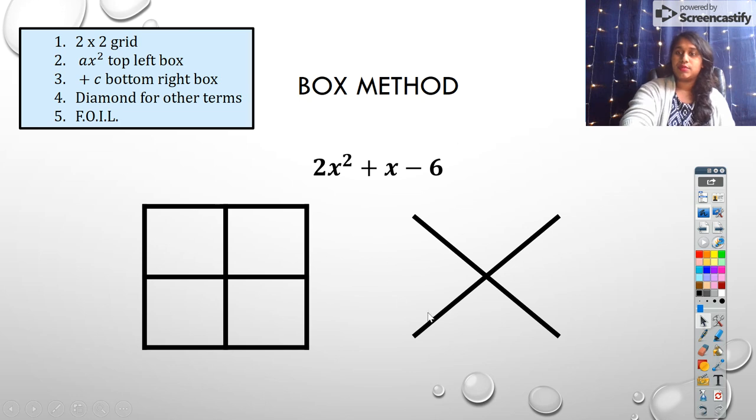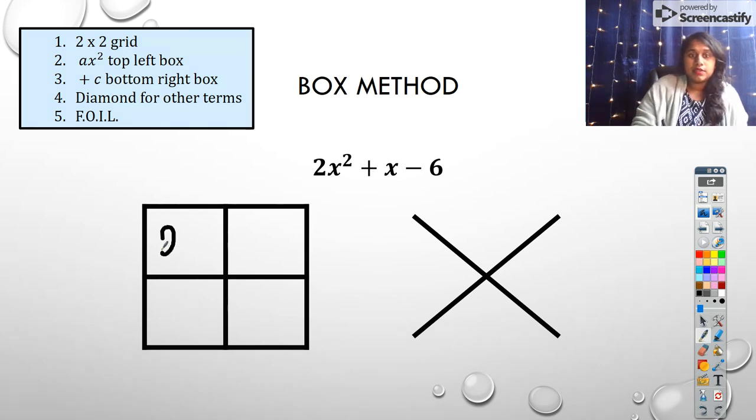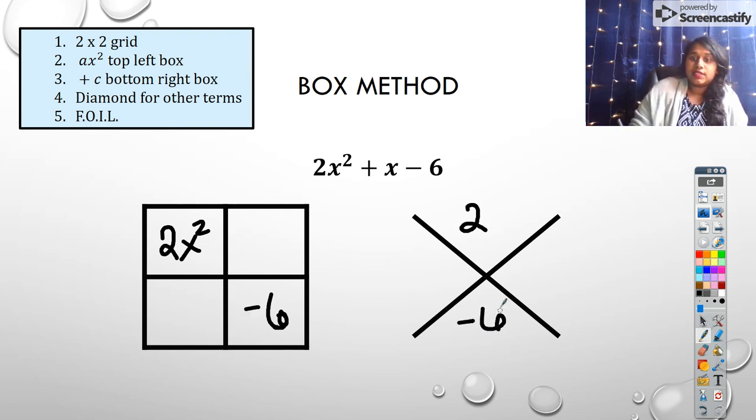Here we have one more example. I'm going to get it started. Again, I'm trying to erase that clock. So here is my 2x2 grid. I put my ax² here. I put my C value here, bringing its positive or negative. And then I'm going to put 2 here and negative 6. And now we can't just say what factors of 2 get me 6. Now we have to say.